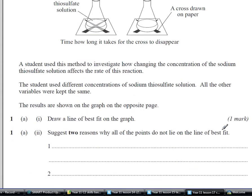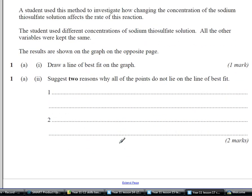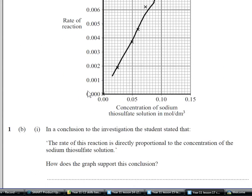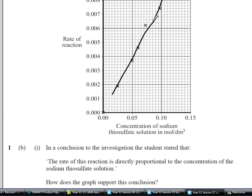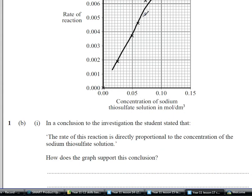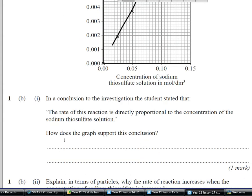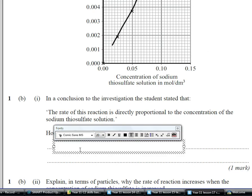So just two reasons why all the points do not lie on the line of best fit, and that's talking about errors and what you haven't measured properly. And then in conclusion to the investigation, the student stated that the rate of reaction is directly proportional to the concentration. How does the graph support this conclusion? Now that is because it is a straight line going through 0, 0. So that's the main point, so you want this straight line going through the origin.